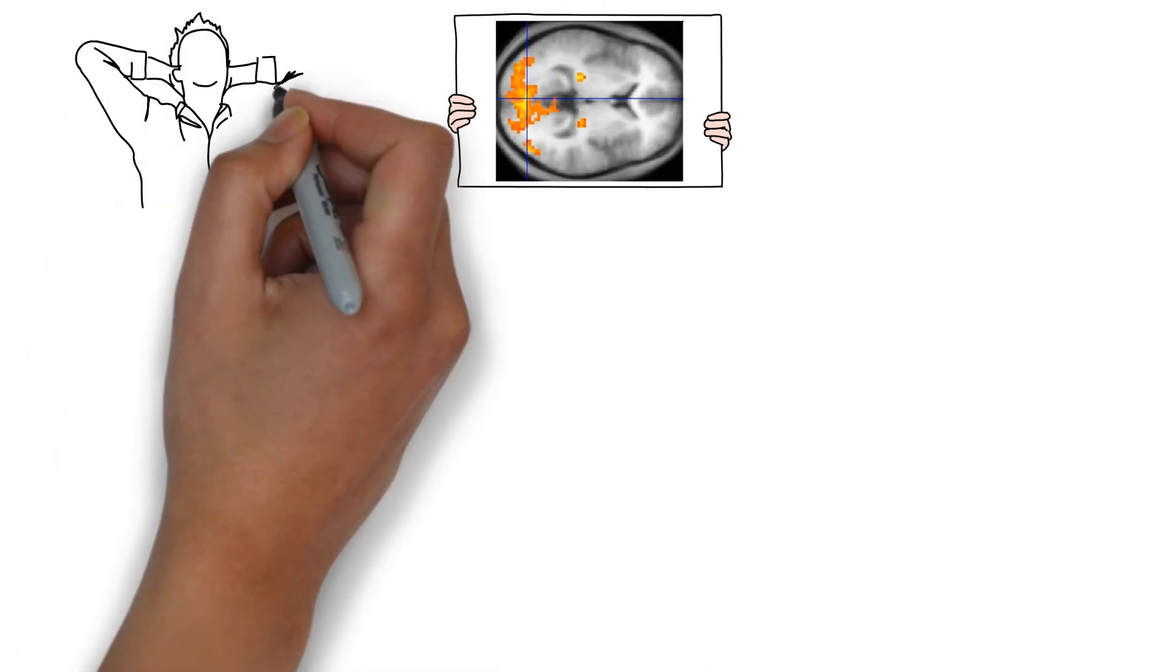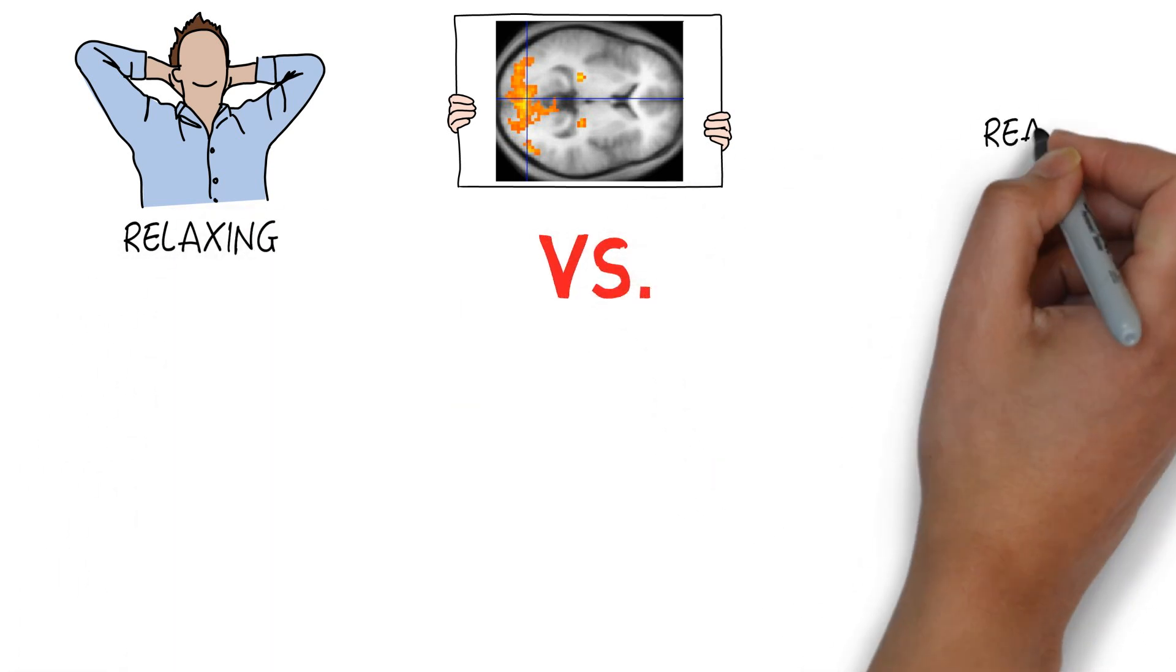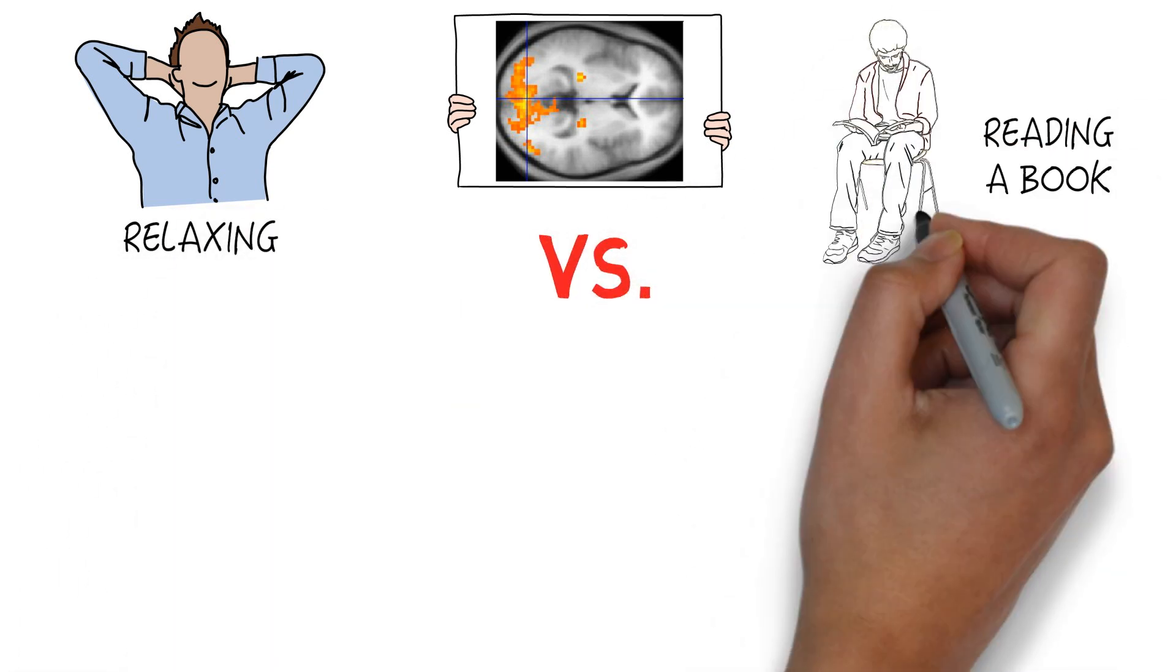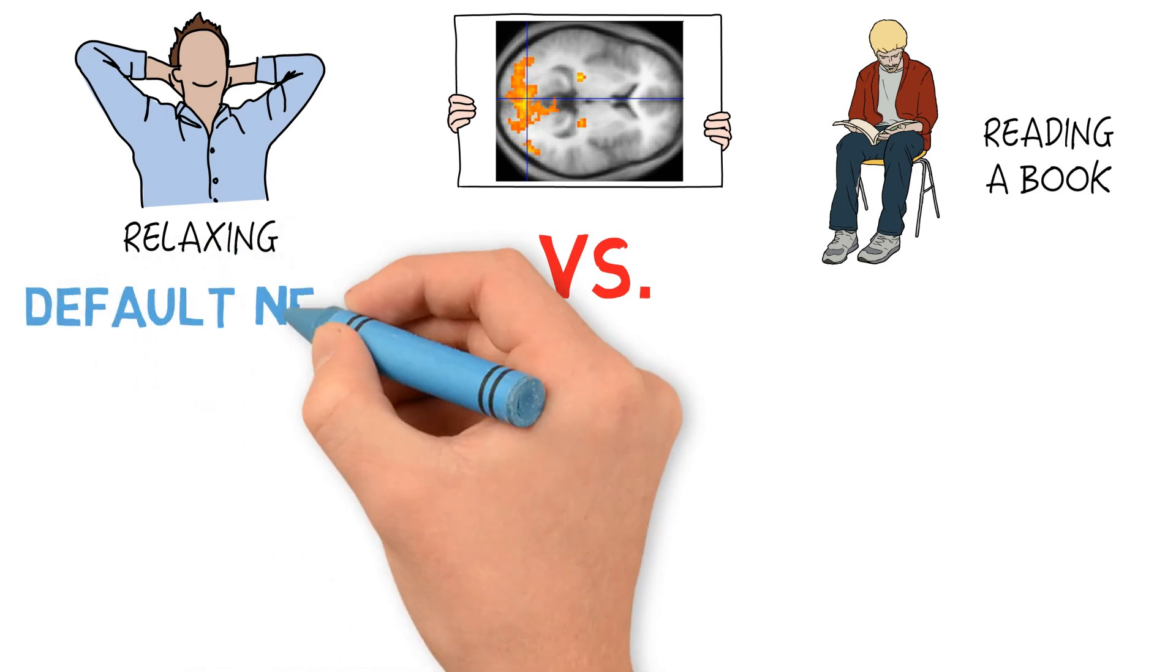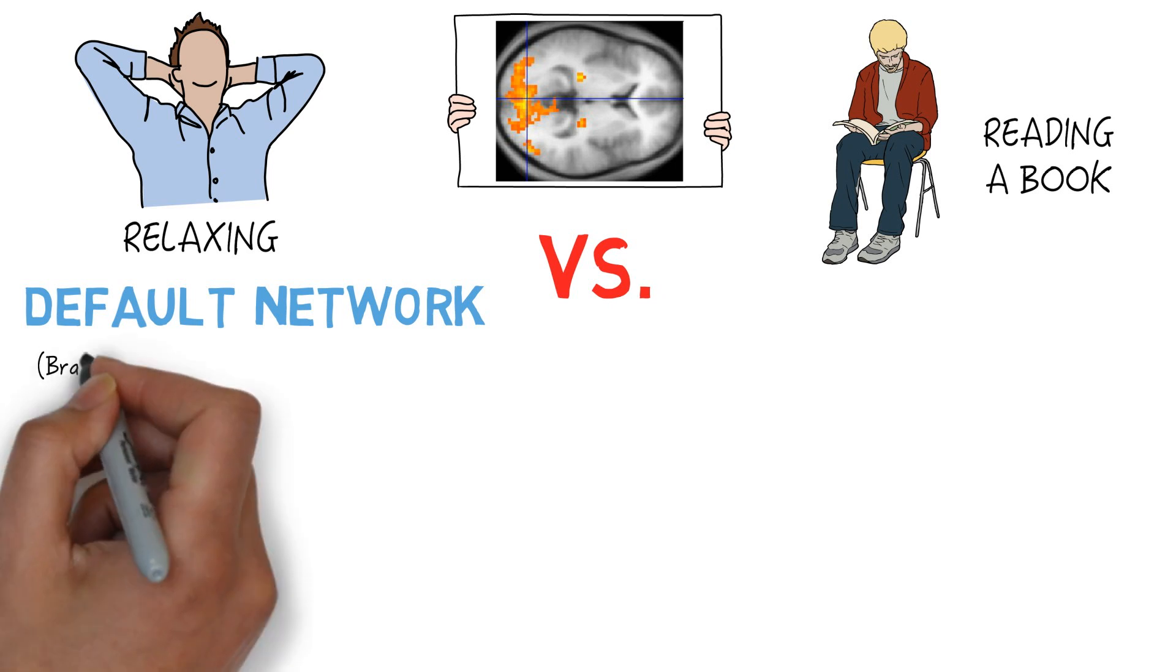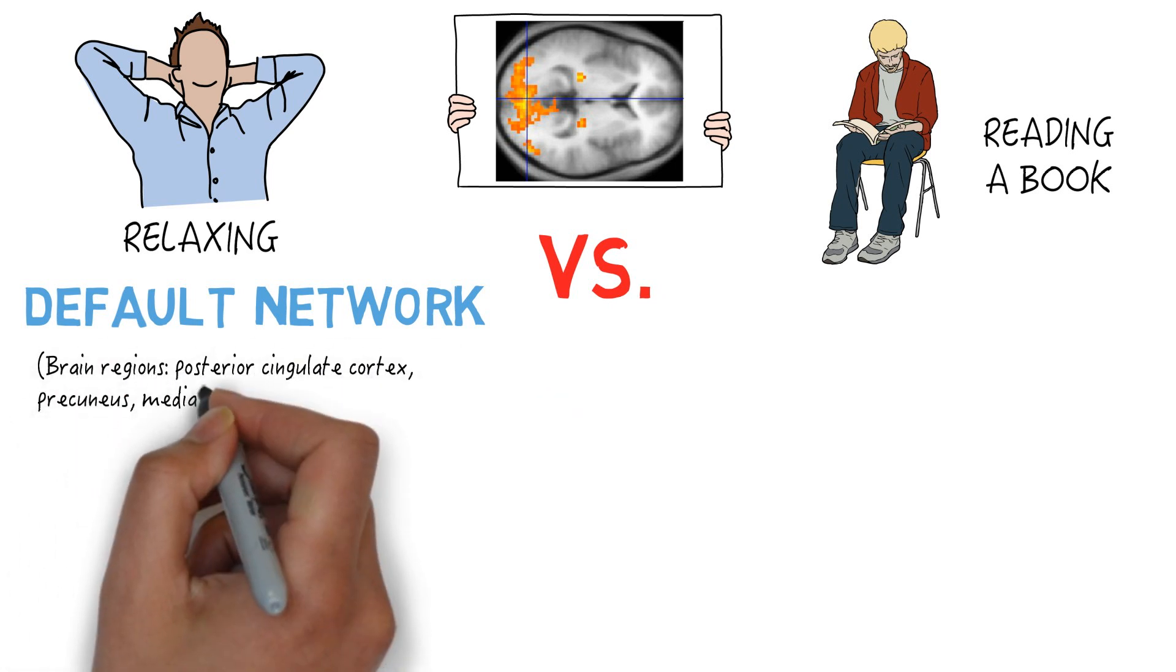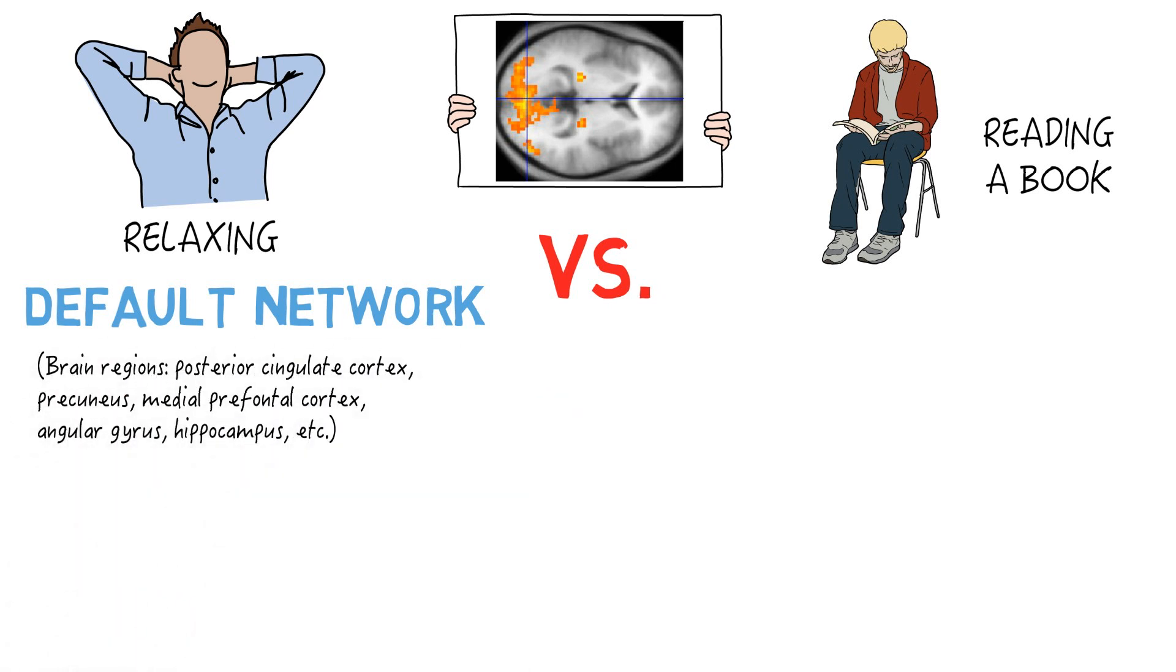Let's say that we have recorded this data when someone is relaxing versus when they're reading a book. There's a set of brain regions referred to as the default network. They seem to be doing more work specifically during relaxation than during reading or any other mental task.